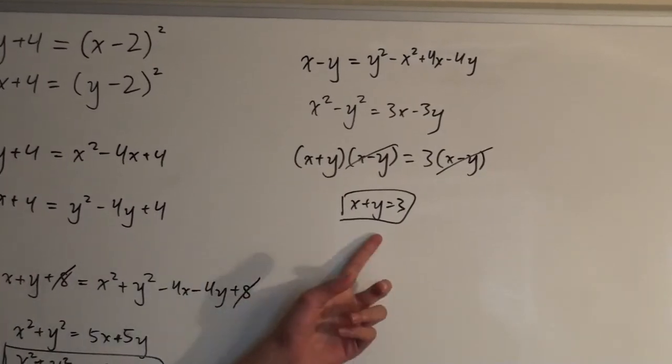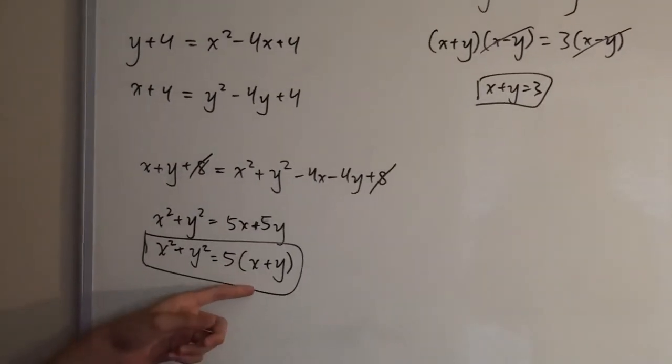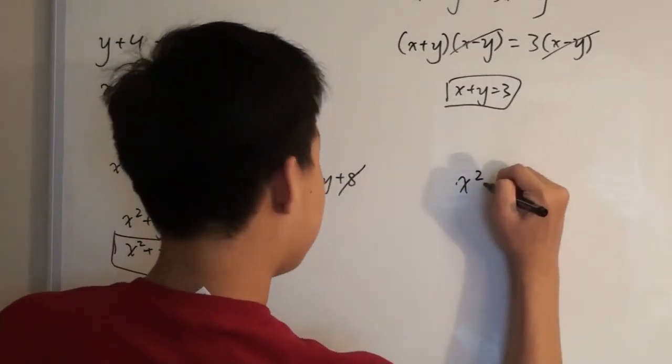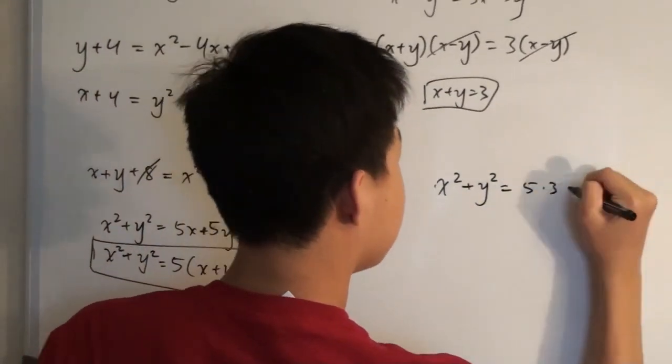Now, since we see this, we can plug this back into the other equation, where we added the two equations. And that gives us x squared plus y squared is equal to 5 times 3, which equals 15.